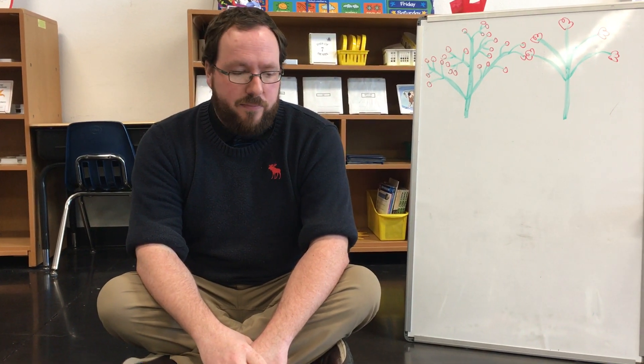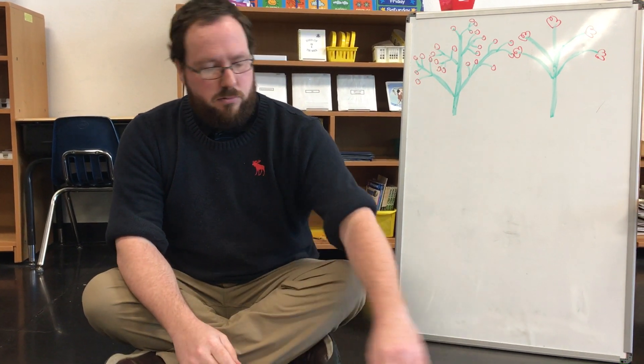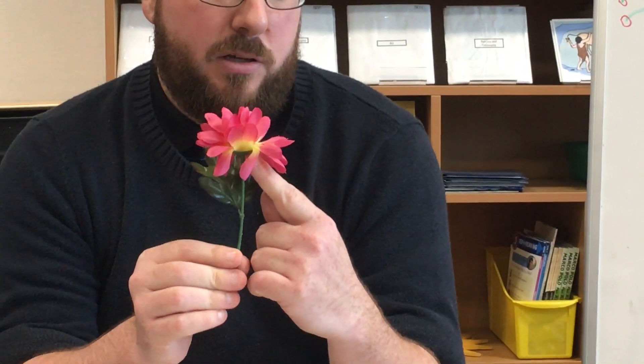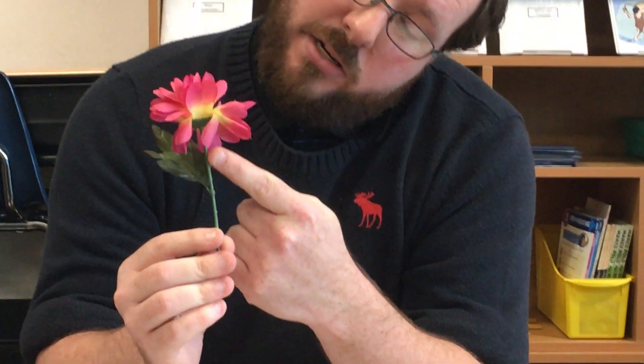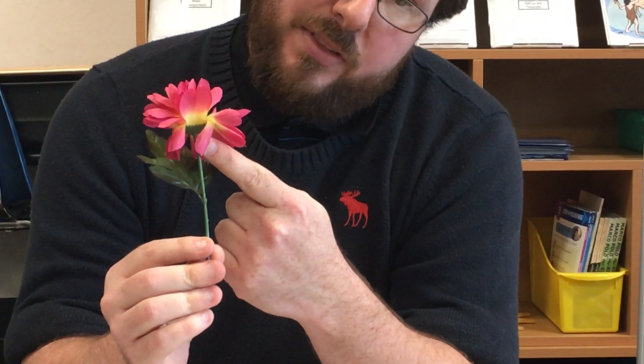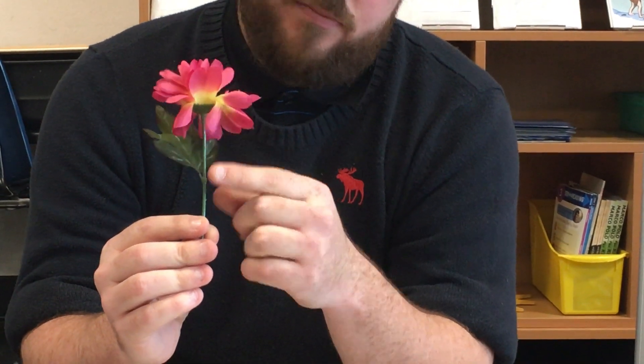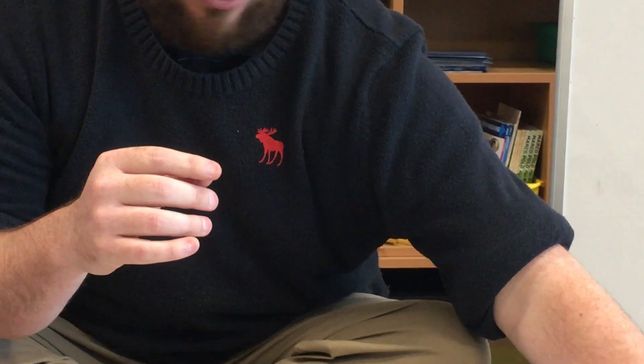Now, there are two words we really have to learn: peduncle and pedicel. You might remember some of those words when we did our parts of the flower lesson. Well, let's review. A peduncle is the part of the stem where the flower is attached. Other flowers have different types of peduncles, but they all have them.